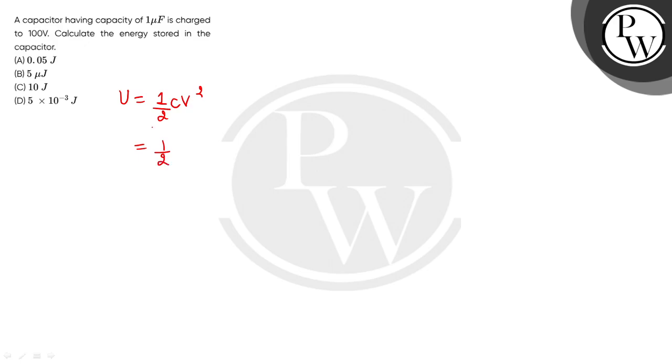Here, C value is 1 microfarad, that is 1 into 10 power minus 6 farad. We have converted 1 microfarad to 1 into 10 power minus 6 farad. And V value is 100.